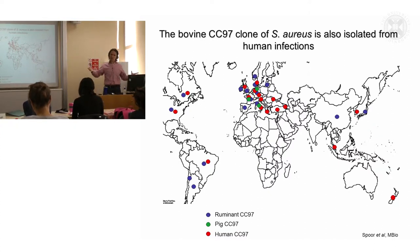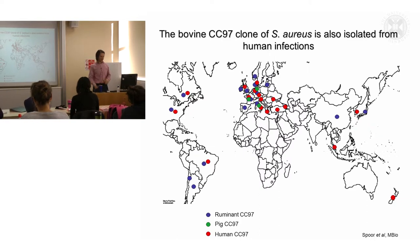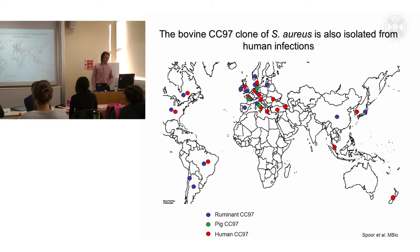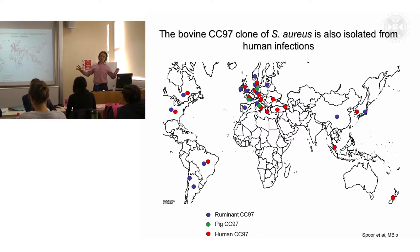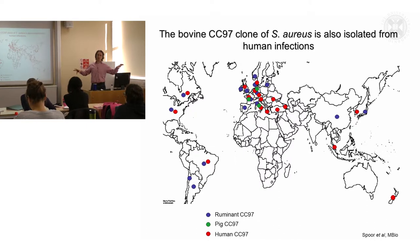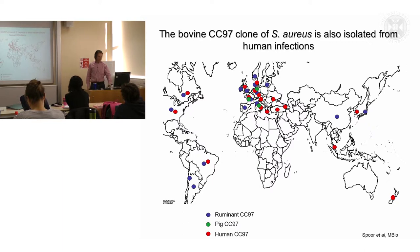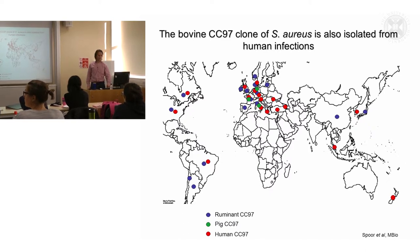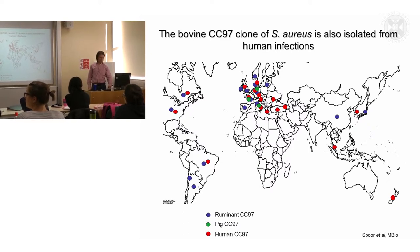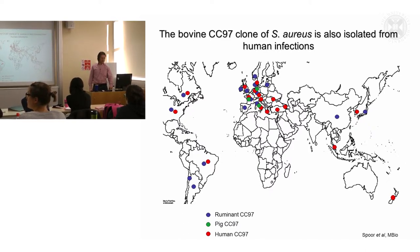So CC97 seems to be on the increase, at least in Denmark and possibly elsewhere. We were interested in understanding the evolutionary history of the CC97 clone — going back to the potential basis for the multi-host tropisms of Staph aureus clones — to see how it evolved.